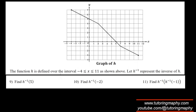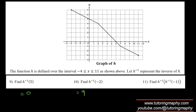Using the same graph: h⁻¹(5) means looking for y = 5 on the h function. That y-value of 5 corresponds to x = 0, so h⁻¹(5) = 0. Similarly, h⁻¹(-2) means looking for y = -2, and the corresponding x-coordinate is 9, so h⁻¹(-2) = 9.